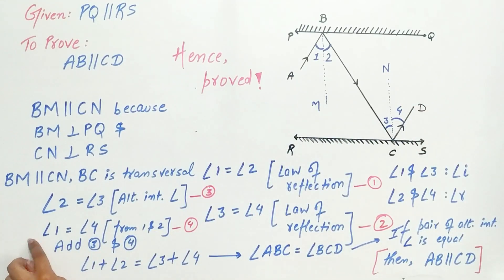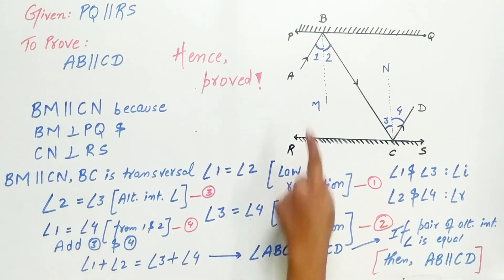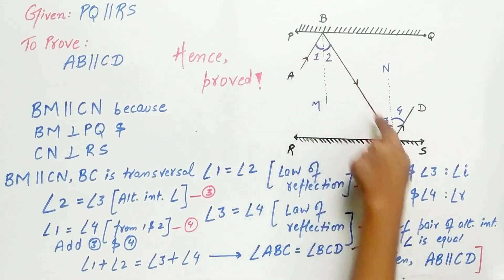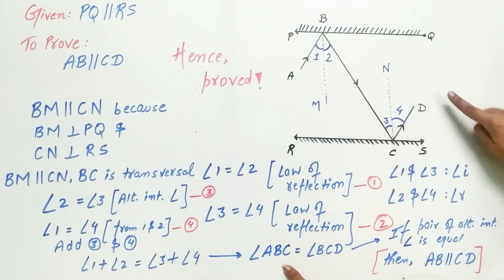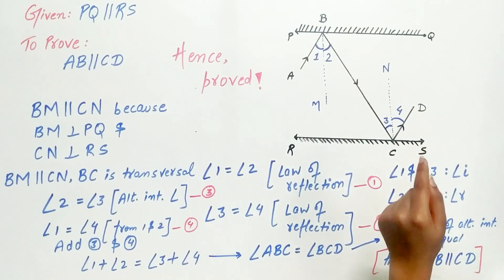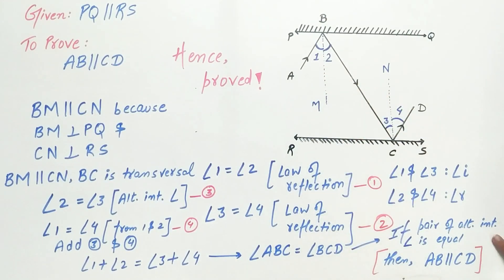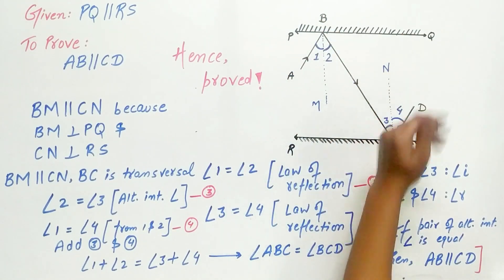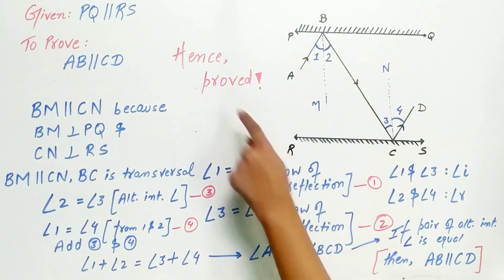Adding both equations: angle 2 plus angle 1 equals angle 3 plus angle 4. Angle 1 plus angle 2 is angle ABC, and angle 3 plus angle 4 is angle BCD. Hence, we know if the pair of alternate interior angles is equal, then AB is parallel to CD. Hence, proved.